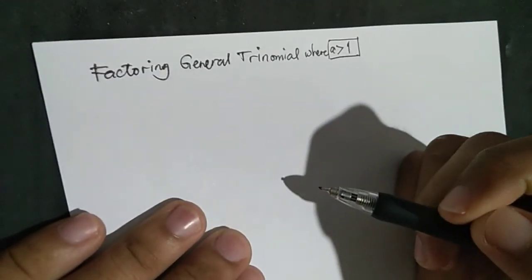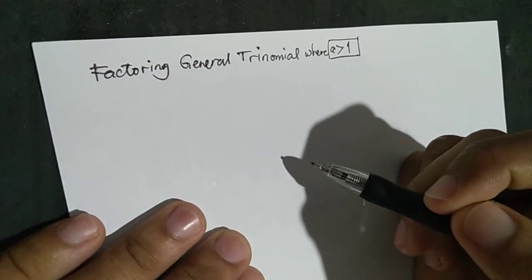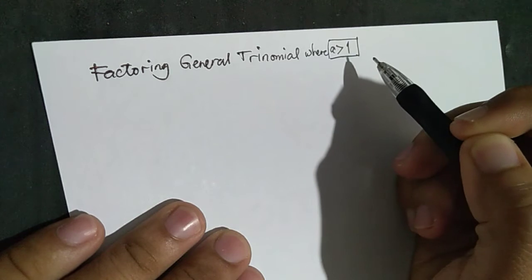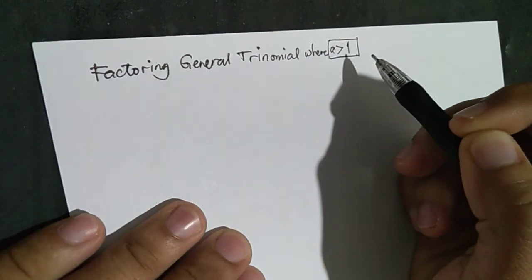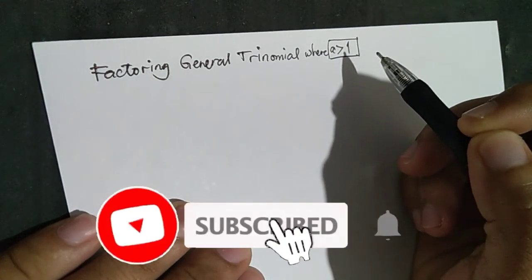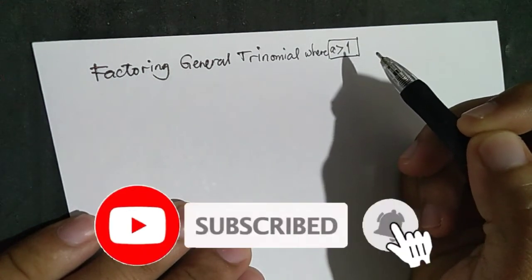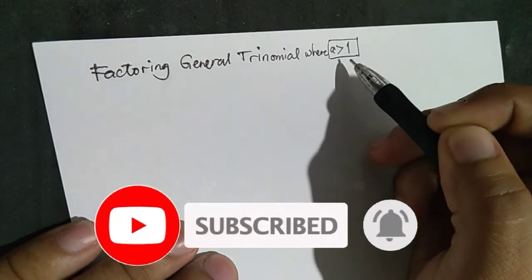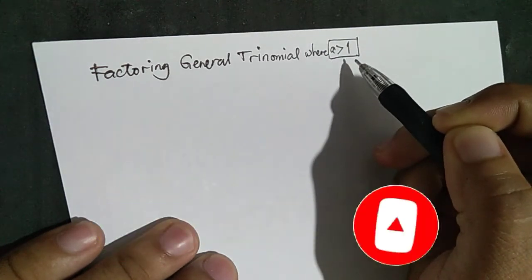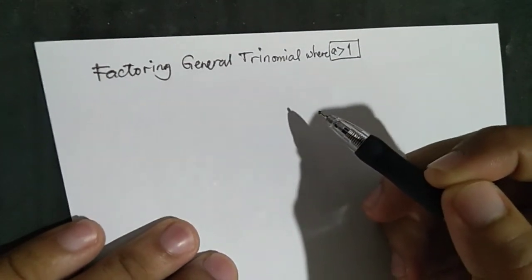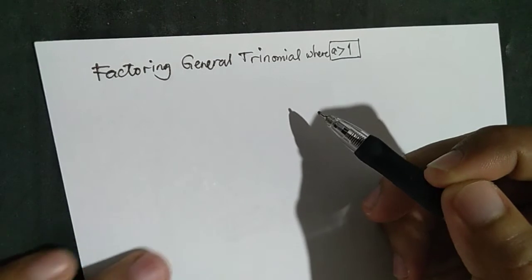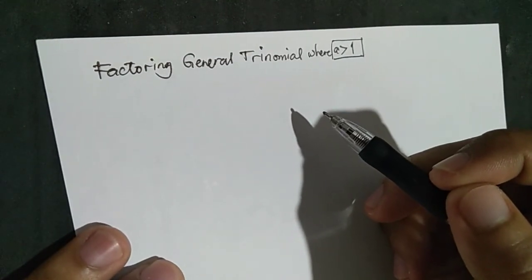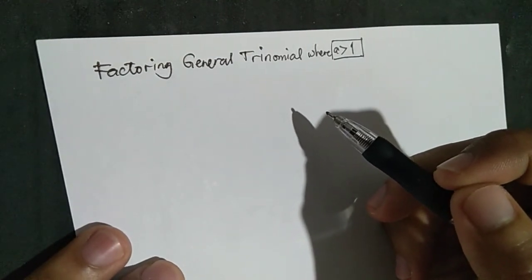Factoring general trinomial where A is greater than 1. To determine if a given expression is a general trinomial where A is greater than 1, the following conditions must be satisfied. First, it is a trinomial.